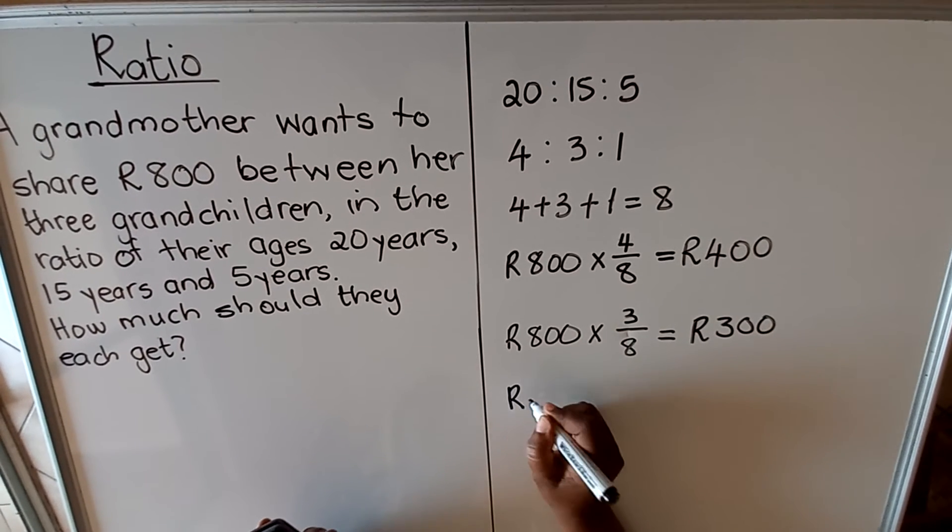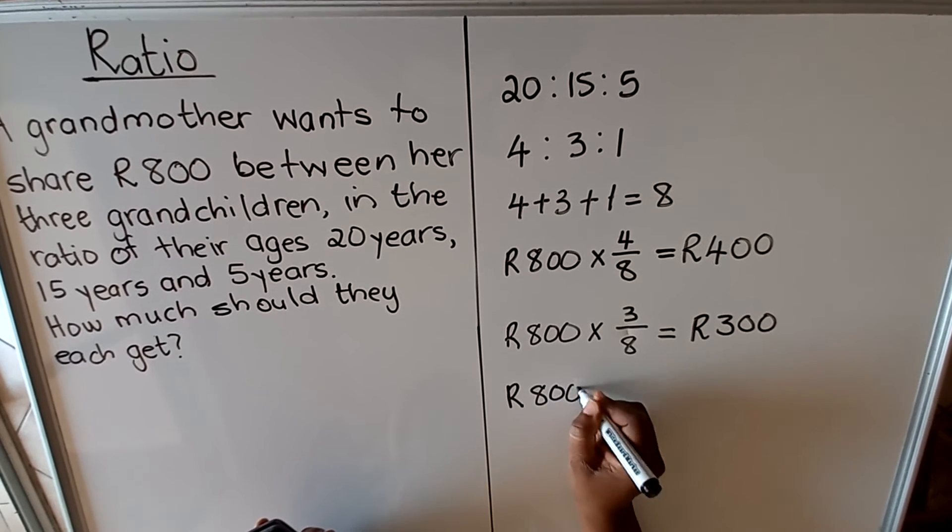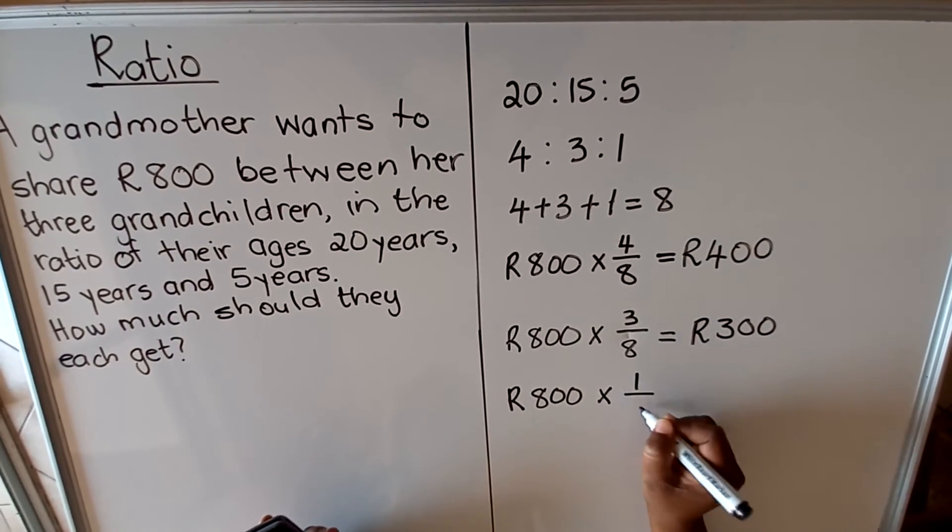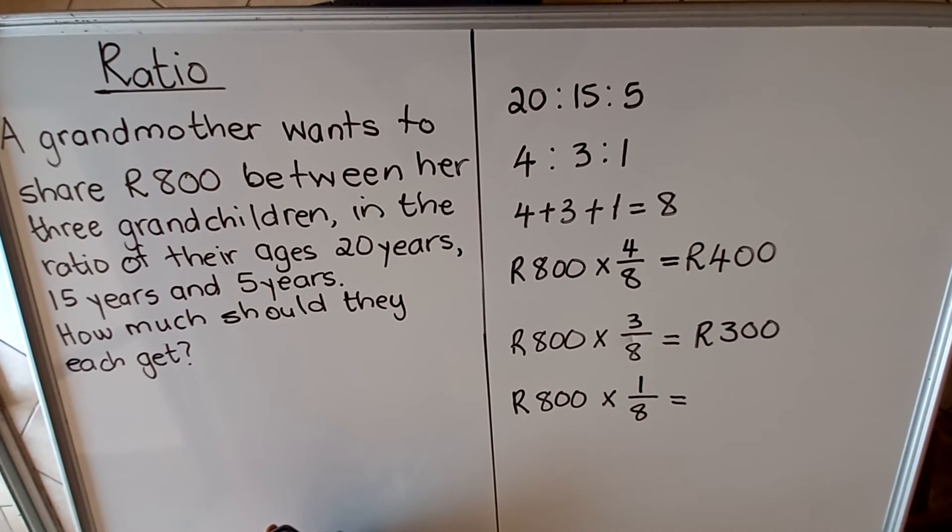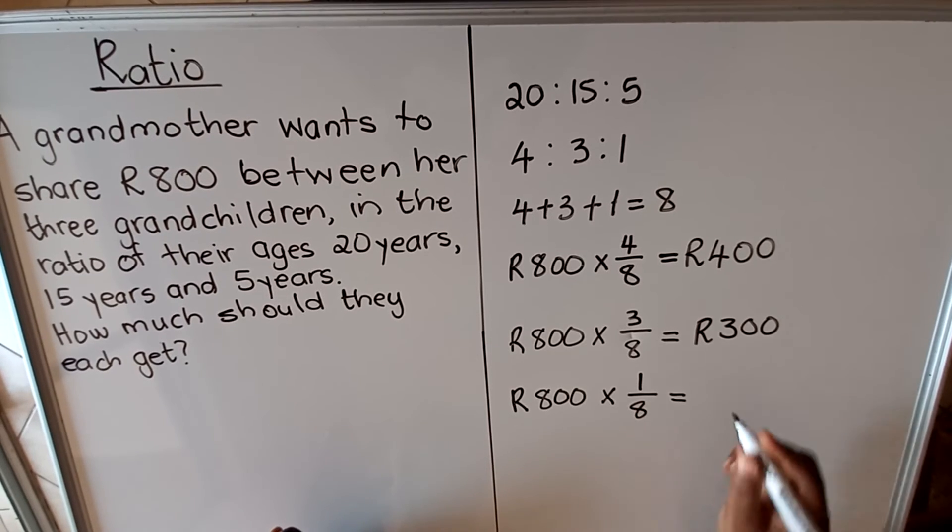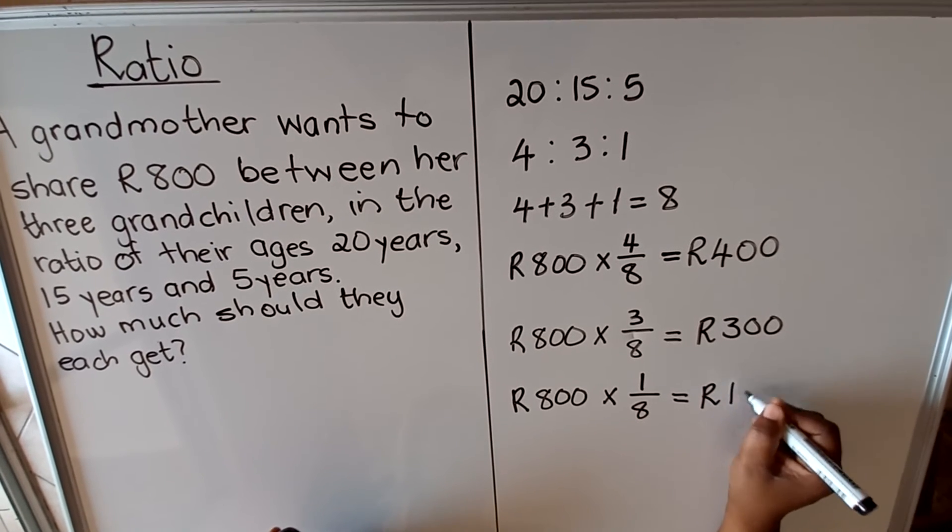Then the last one, the 5 year old, 800 multiplied by the simplified ratio of 1 out of 8. Then the 5 year old will get 100.